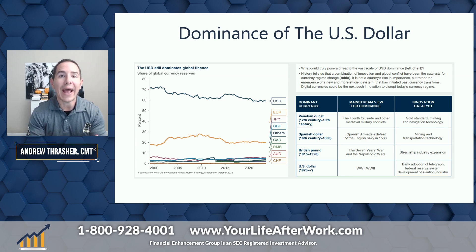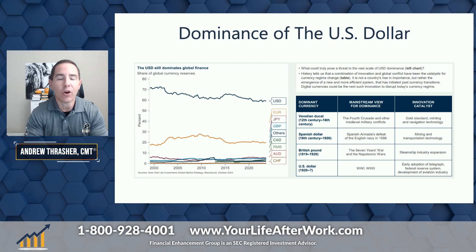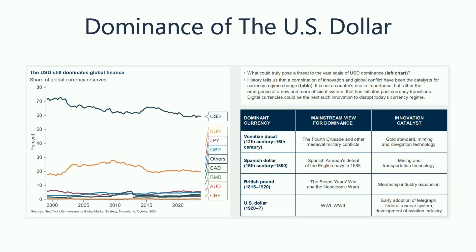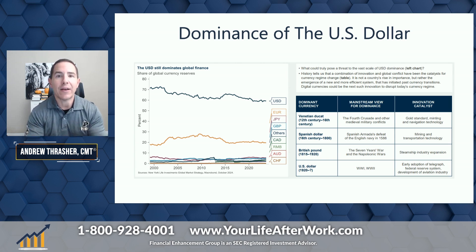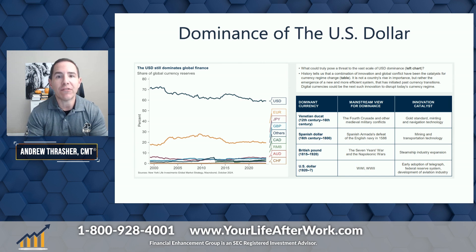Now let's shift to the table and play devil's advocate — what could actually cause a shift where the dollar no longer is the dominant reserve currency? We can look at previous times where there has been a shift from one currency to another, and there have only been a handful since the 16th century. The Spanish dollar took over after the Spanish Armada defeated the English Navy. Then the pound dominated from 1815 to 1920 after the Napoleonic Wars, driven also by innovation catalysts like the steamship and mining transportation. Then in the 1920s, World War I, World War II, and the adoption of the Federal Reserve System, the telegraph, and aviation technologies shifted dominance to the U.S. dollar. What this shows is that it's not so much other currencies taking market share — it's really been either major conflict or innovation catalysts that spark a shift.